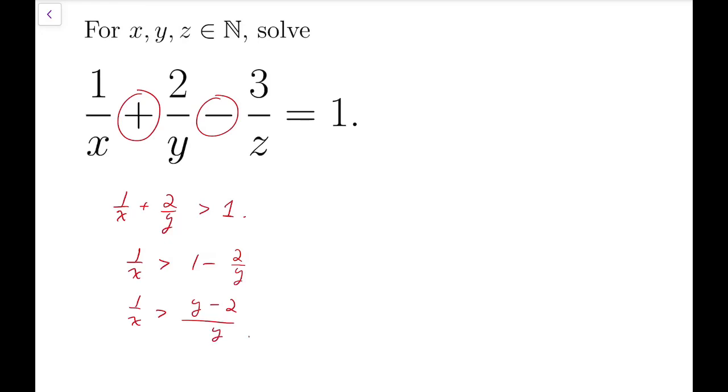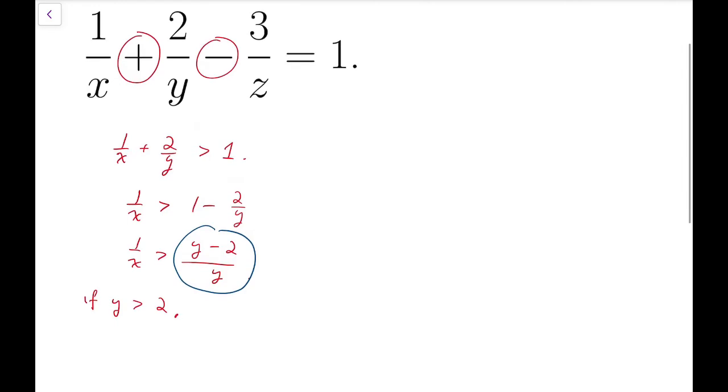Now if y is greater than 2, then the right-hand side becomes positive. And so I can just take the reciprocal of both sides and say that x is less than y over y minus 2.